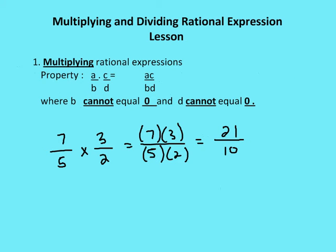Let's talk about multiplying rational expressions. The property we'll use is that a over b times c over d equals a times c over b times d, where b and d cannot be equal to 0.